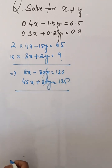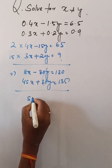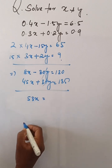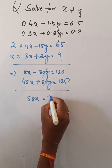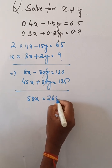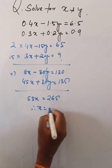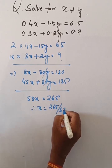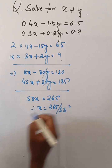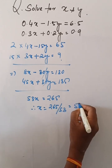The y terms are cancelled. Adding these equations, 53x is equal to 265. x is equal to 265 divided by 53, which is equal to 5.